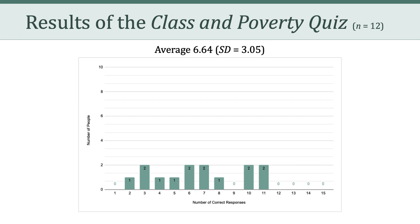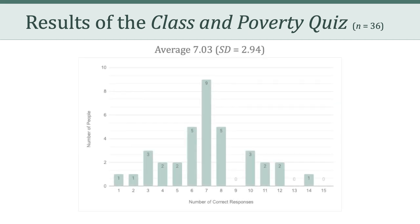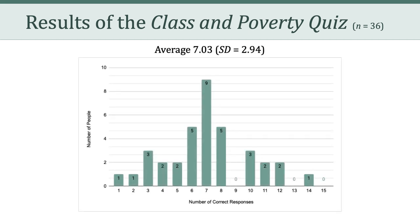I've used this quiz a few times over multiple semesters of this class. Here are your results combined with students from all of the previous years. This chart is based on 36 responses. When calculating for all 36 responses, the average goes up slightly from 6.64 to 7.03, which is still less than 50% out of 15. The point of an exercise like this is to get us thinking about the profound differences in class and poverty levels in the United States, and in turn, get us thinking about how those differences play out when it comes to education and technology.